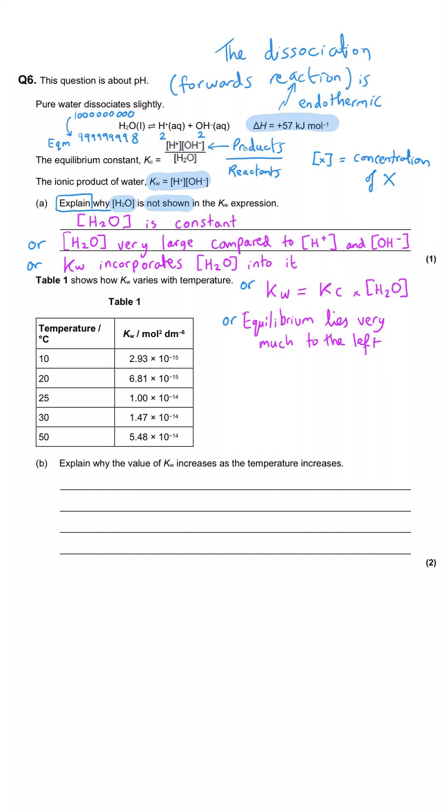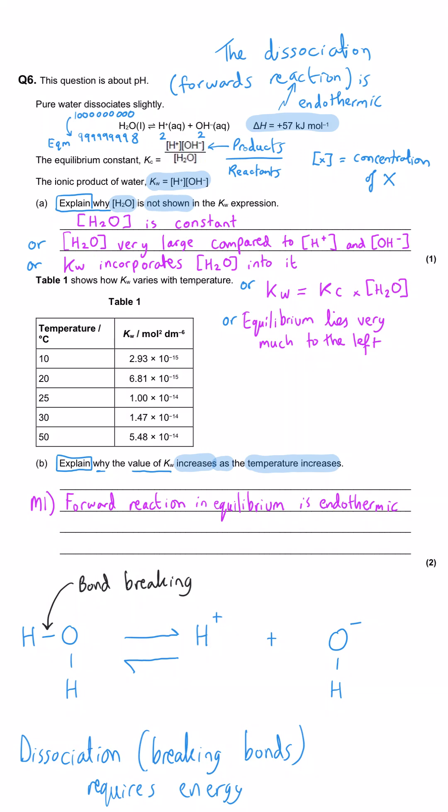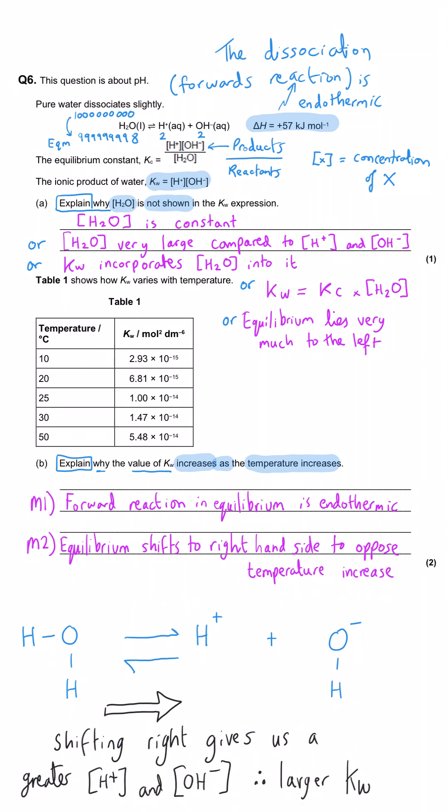Table one shows how temperature increases affect the value of Kw. In part B, we're asked why the value of Kw increases as the temperature increases. The first mark is to say that the forward reaction in the equilibrium is endothermic, as we can see from the given value. As a result of that endothermicity, the equilibrium will shift to the right when temperature is increased, which gives us a greater concentration of hydrogen ions and hydroxide ions, and so the value of Kw will be larger.